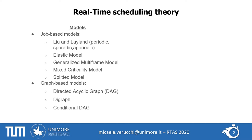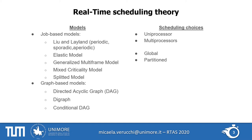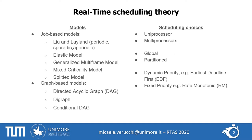Once the model is picked, some scheduling choices have to be made: whether tasks will run on a single processor or a multiprocessor, whether the schedule will be global or partitioned, whether the algorithm considers fixed or dynamic priorities, and last but not least, the preemption policy.